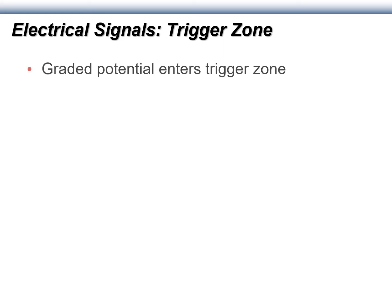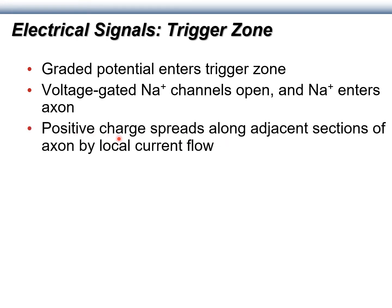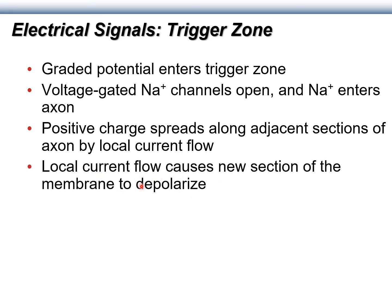Let's go over action potentials one more time. A graded potential enters the trigger zone, originating from some part of the cell or from a previous patch of axonal membrane. Voltage-gated sodium channels open, sodium enters the axon causing a depolarization event. That positive charge spreads along adjacent sections — that's the phenomenon known as local current flow — which causes a graded potential to depolarize the next section of membrane.